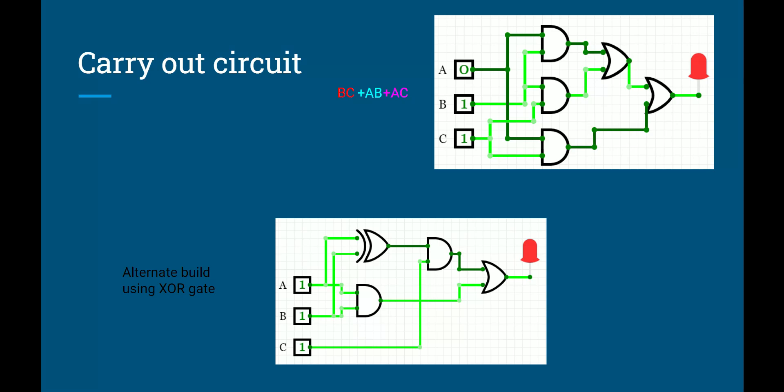But really where it's going to help is when we combine our two circuits together, the carry out and the sum, because we already have to use an XOR gate for the sum, it's going to make wiring our carry out a little bit easier.